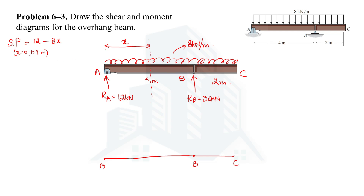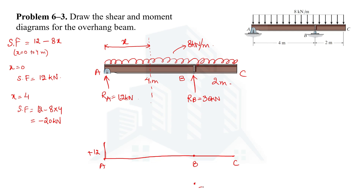Using the shear force equation V = 12 − 8x: at x = 0 (point A), V = +12 kN; at x = 4 m (point B), V = 12 − 32 = −20 kN. So the shear force varies from +12 kN at A to −20 kN at B, indicating a linear (actually linear due to UDL) variation between these two points.